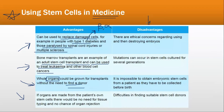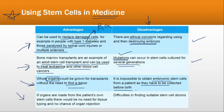Along with advantages, there are also some disadvantages. First, there are ethical concerns regarding using and then destroying embryos to obtain embryonic stem cells. Second, mutations — changes in genetic sequences — can occur in stem cells cultured for several generations, resulting in various diseases. Third, it is impossible to obtain embryonic stem cells from a patient as they must be collected before birth. Fourth, there are difficulties in finding a suitable stem cell donor.